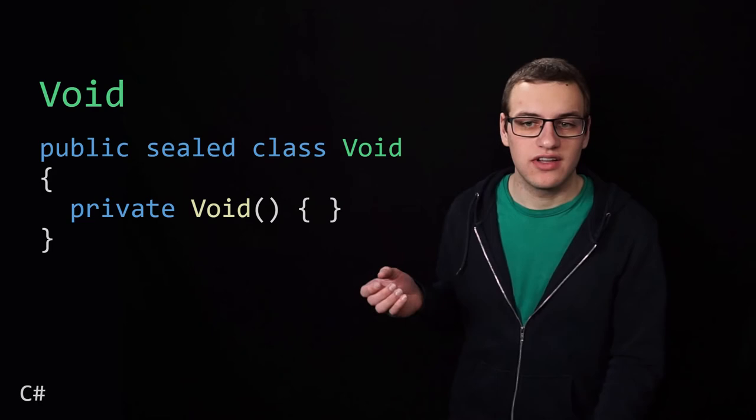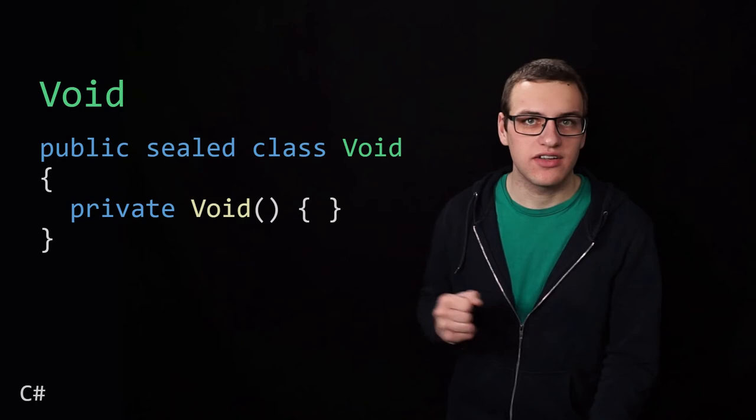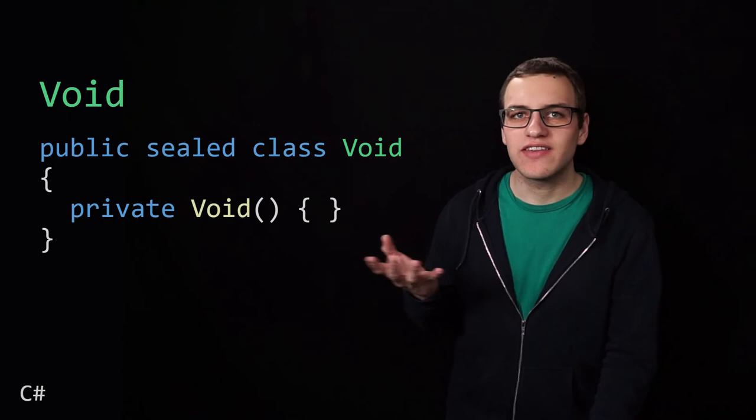This is an example of how we can define void in an object-oriented language like C-sharp. So as you can see, this is a class void, which only has a private constructor that is never actually called. Furthermore, the class is sealed, so there cannot be any other classes extending from this class. In this way, it is never actually possible to create a value of type void, which means that all the values of type void form an empty set. So if we can look at types as sets of values, what then are functions in this model?